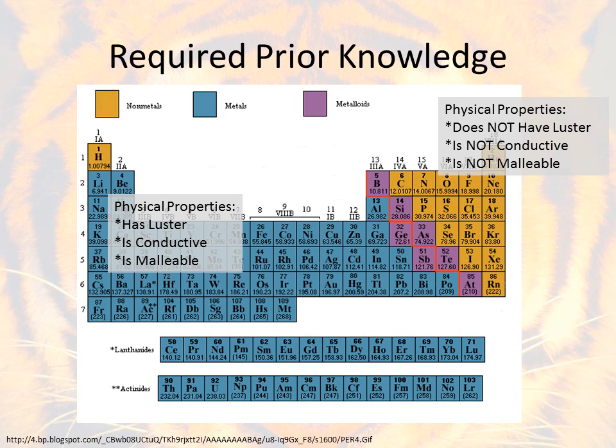For the non-metals, those physical properties were pronounced the opposite. They tend to not have luster, so they're not shiny. They're also not conductive usually, so gas and electricity has a hard time passing through them. And they're usually not malleable. So if we hammer them and try to get them into a new shape, they're usually brittle and they break.